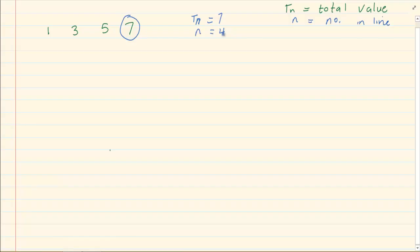Now let's understand this again. Tn is the value, whereas n is the number it is standing in the row.